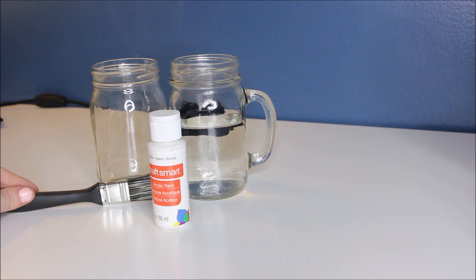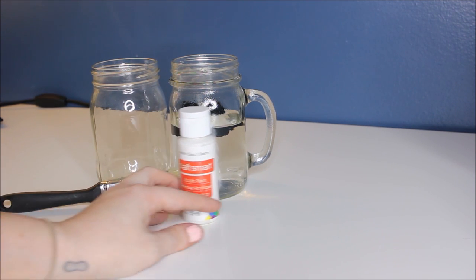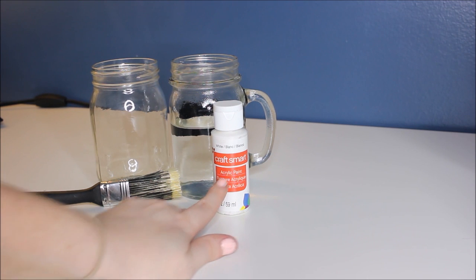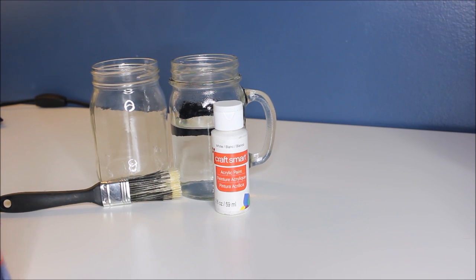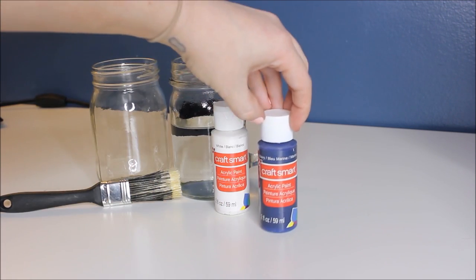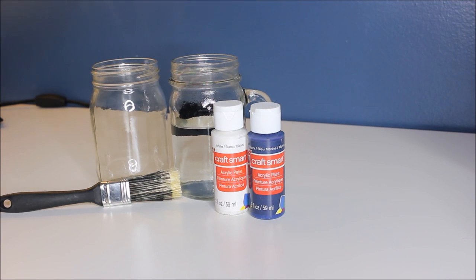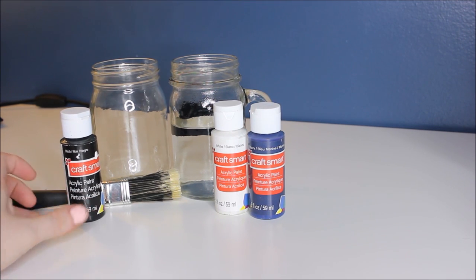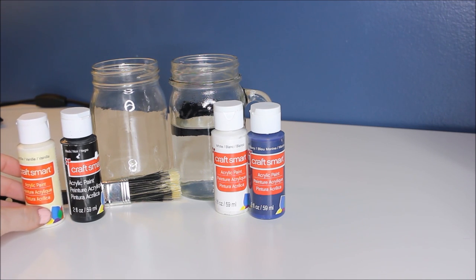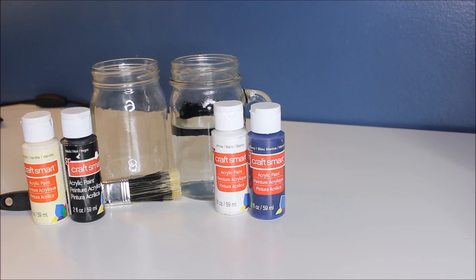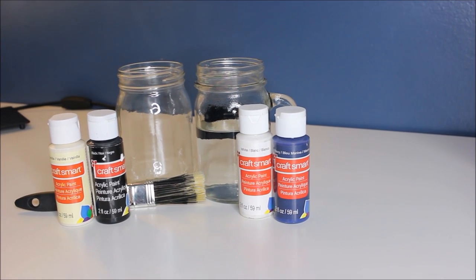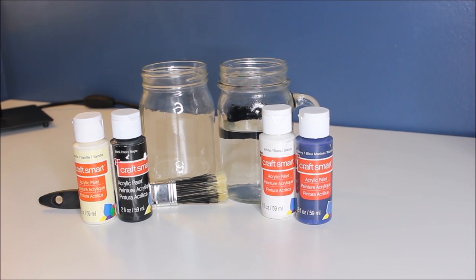Then you need your paint. For this particular project, I'm using white as the base color. I'm also using blue as the undercoat color that shows through. And then I want gray. So I'm going to add black in order to mix it with the white. Choose whatever colors you want. It's great to use several colors. You get several layers.